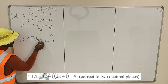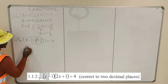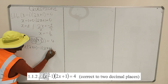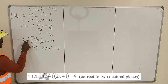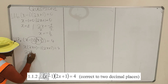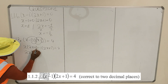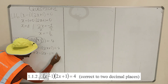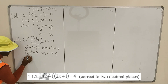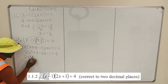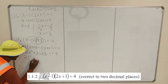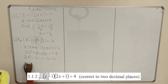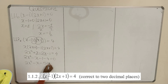So we multiply this bracket out: x times (2x plus 1) minus 1 times (2x plus 1) equals 4. That gives us 2x squared plus x minus 2x minus 1 equals 4. Grouping like terms: 2x squared minus x minus 1 minus 4 equals 0, which simplifies to 2x squared minus x minus 5 equals 0.